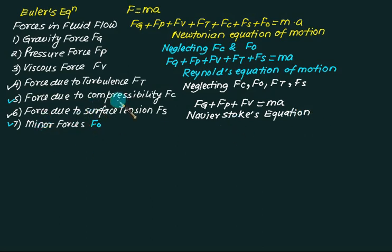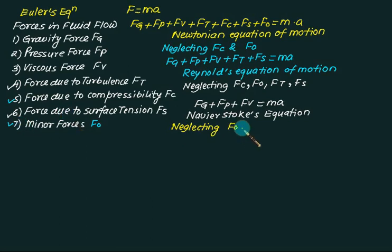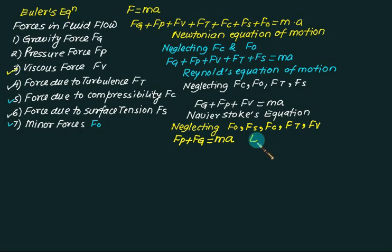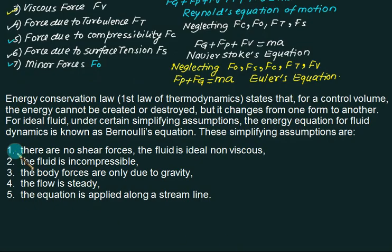Next comes Euler. He neglected minor forces, then surface tension force, compressibility force, turbulence force, and even the viscous force. So the assumptions made by Euler leave only two forces: the pressure force Fp and the gravity force Fg.